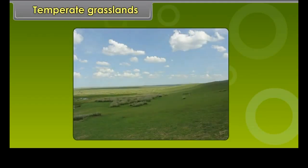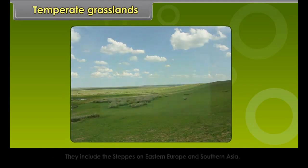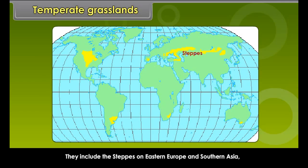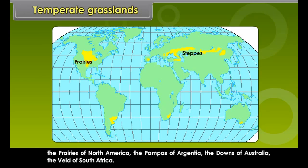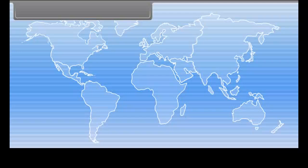Temperate Grasslands are known by different names in different continents. They include the Steppes of Eastern Europe and Southern Asia, the Prairies of North America, the Pampas of Argentina, the Downs of Australia, and the Veld of South Africa. The Temperate Region lies in the interior of the continents and receives low rainfall.